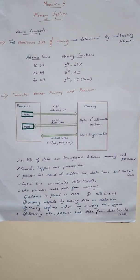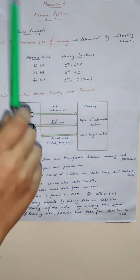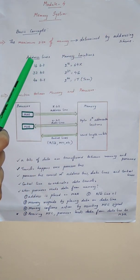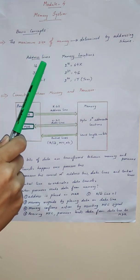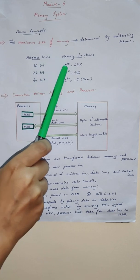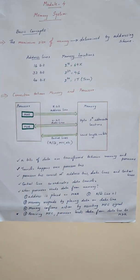We will move on to the next module which talks about the memory system. We will discuss the basic concepts here. The first is the maximum size of the memory. The maximum size of the memory that can be used in any computer is determined by the addressing scheme. So let's say our system has a 16-bit address line. The number of addressable locations this system can have is 2 to the power 16, that is 64 kilobits of memory.